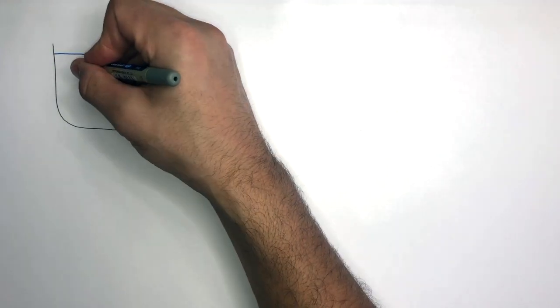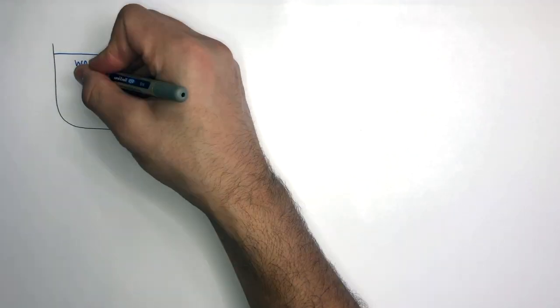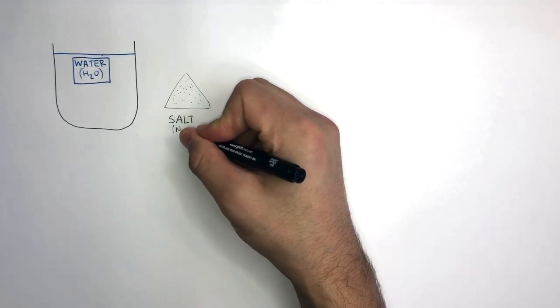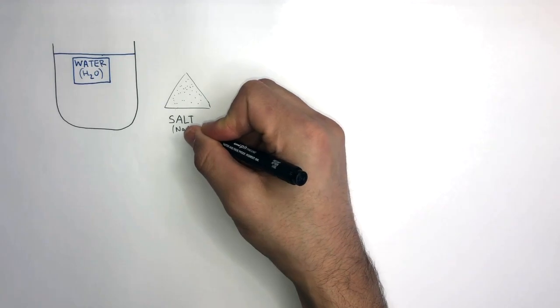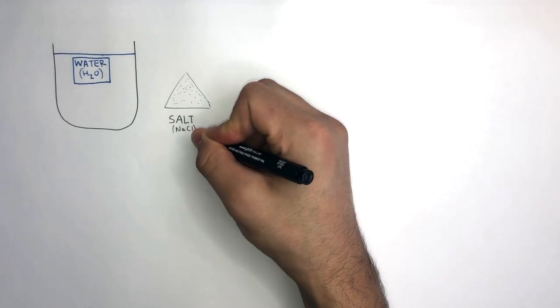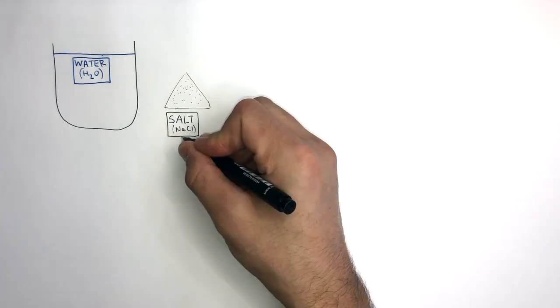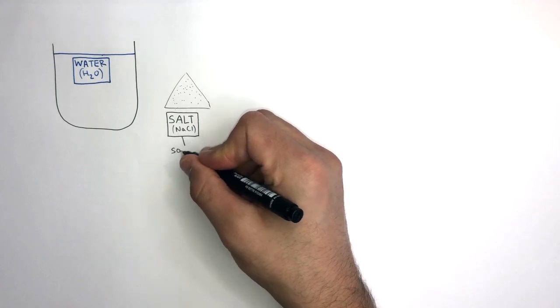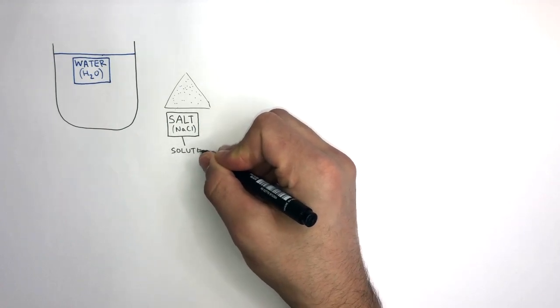If you have a cup of pure water and some salt — in this case sodium chloride — and you wanted to dissolve the salt in the water, then the salt is known as the solute.